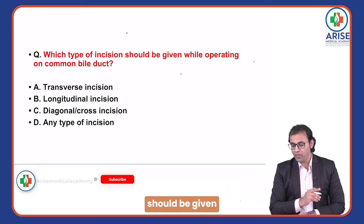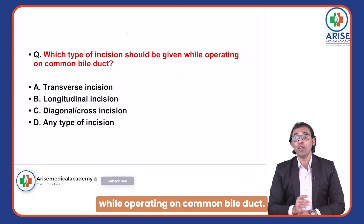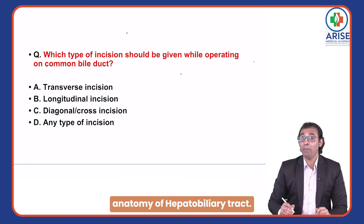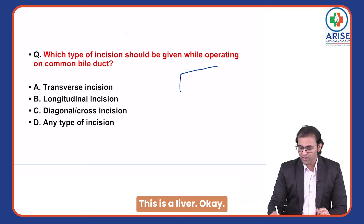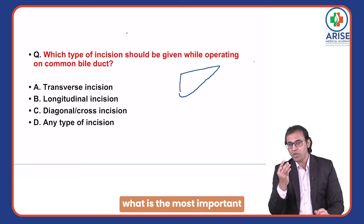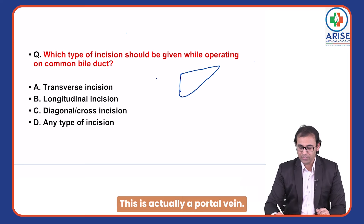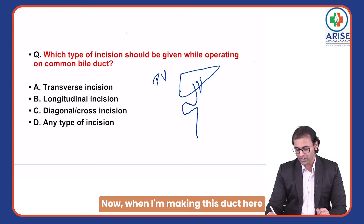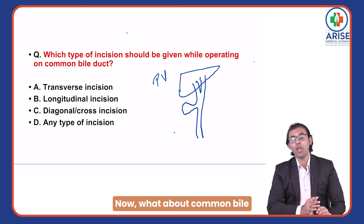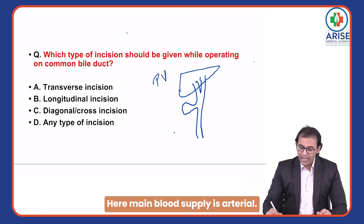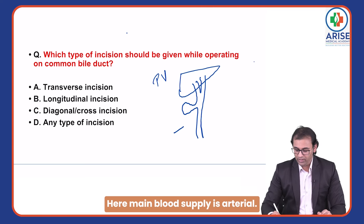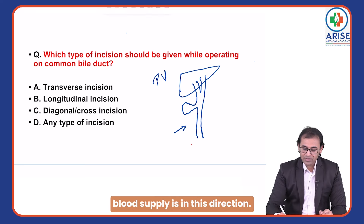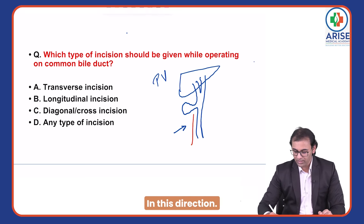What type of incision should be given while operating on the common bile duct? For this we need to know the basic anatomy of the hepatobiliary tract. This is the liver. The most important blood supply to the liver is the portal vein. Now, regarding the common bile duct, the main blood supply is arterial, and this arterial blood supply runs in a specific direction.